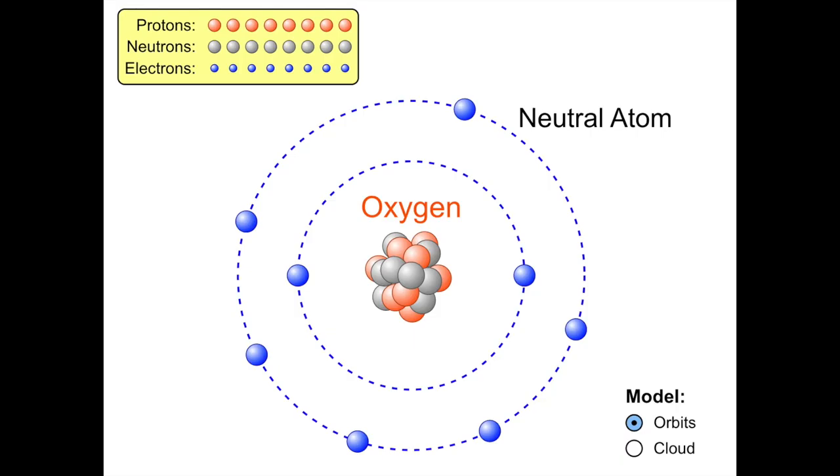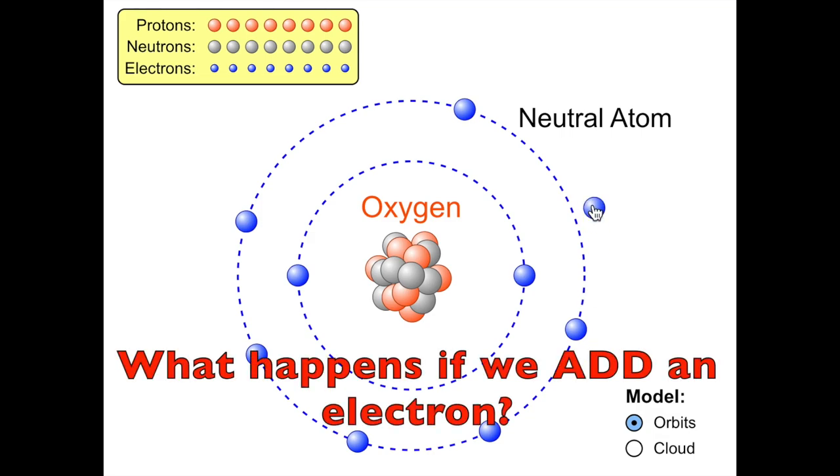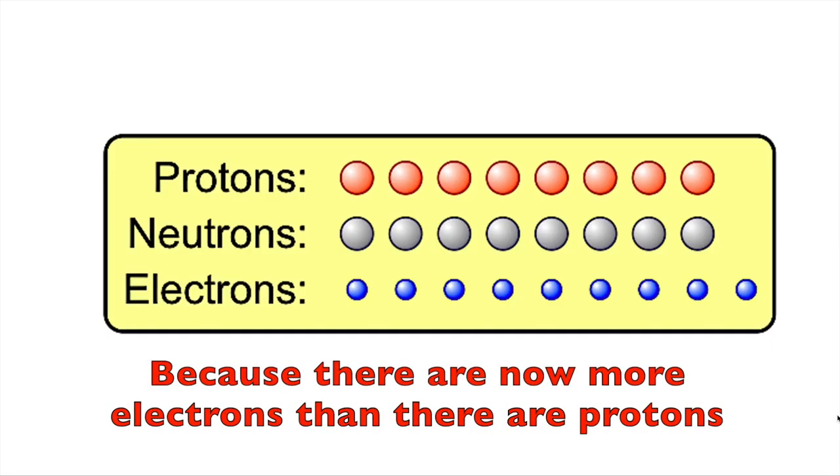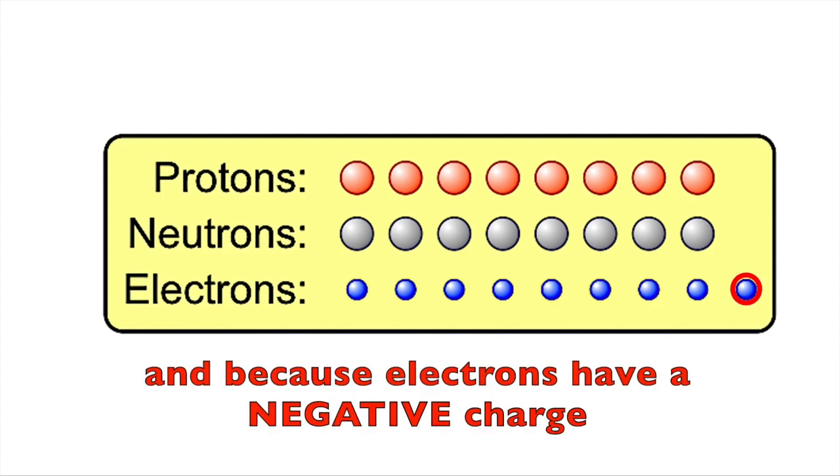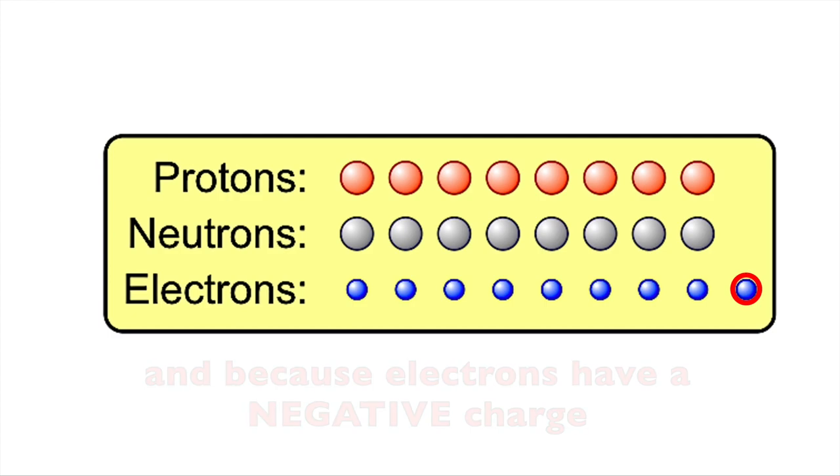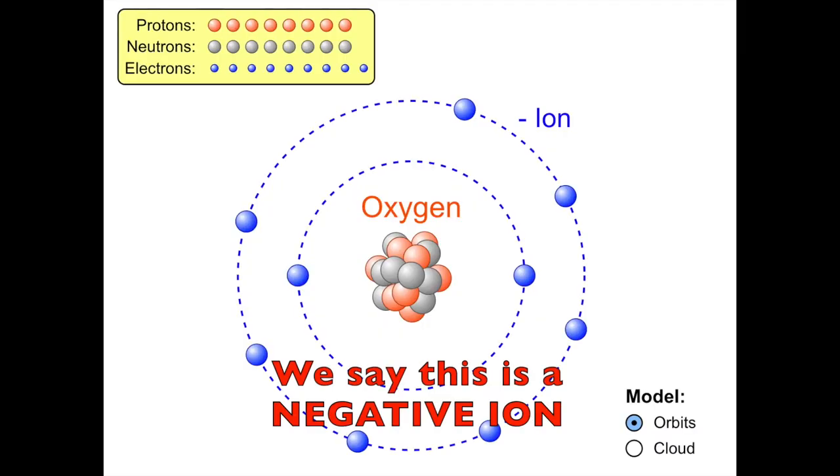Let's go back to our neutral oxygen atom again. What happens if we add an electron? Because there are now more electrons than there are protons, and because electrons have a negative charge, we say this is a negative ion.